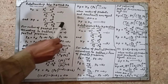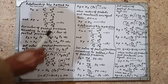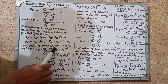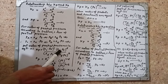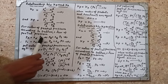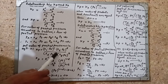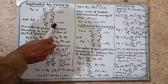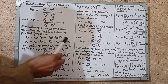Now put the values of partial pressures into equation number 2. So we get: Kp = (XC × PT)^c × (XD × PT)^d divided by (XA × PT)^a × (XB × PT)^b. PC = XC × PT, so the entire bracket is raised to power c. Similarly PD = XD × PT raised to power d. PA = XA × PT raised to power a, and PB = XB × PT raised to power b.